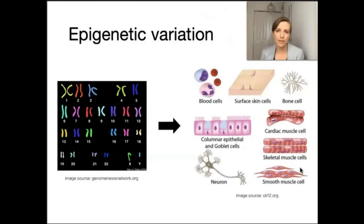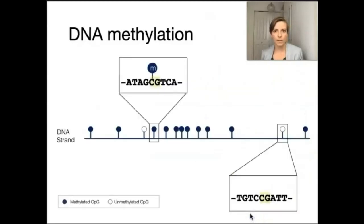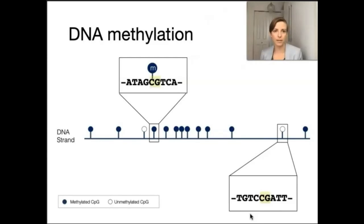One of the commonly studied mechanisms that explores at least some of this variation is DNA methylation. DNA methylation is a chemical modification to an individual base, specifically the C or the cytosine. When a methylation group is added to a C, it is referred to as that base being methylated.